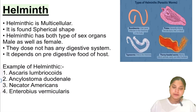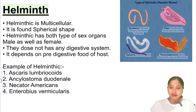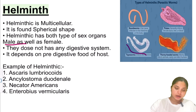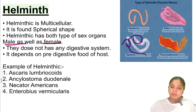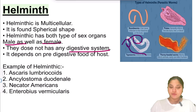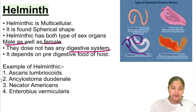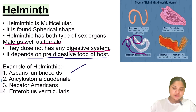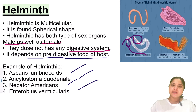Helminths are multicellular organisms found in a spherical shape. They have both types of sex organs — one end has female organs and the other end has male organs. They do not have their own digestive system, so they are totally dependent on the host. They depend on the pre-digested food of the host for nourishment. Examples include Ascaris lumbricoides, Ancylostoma, and Enterobius vermicularis.